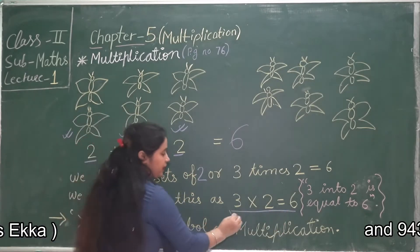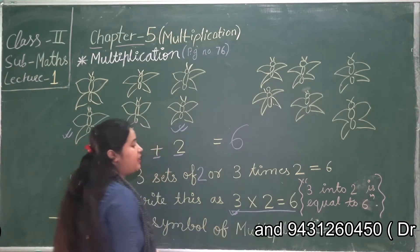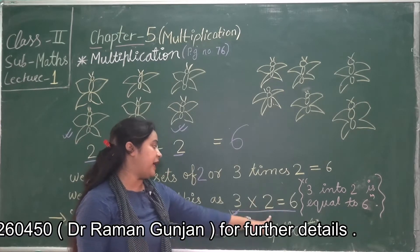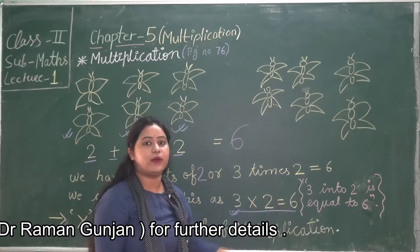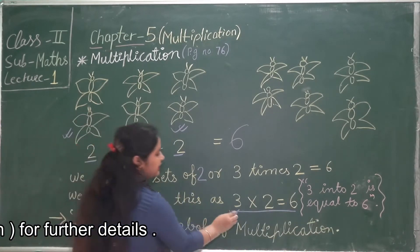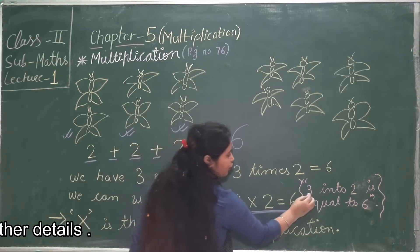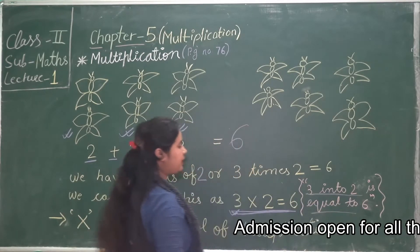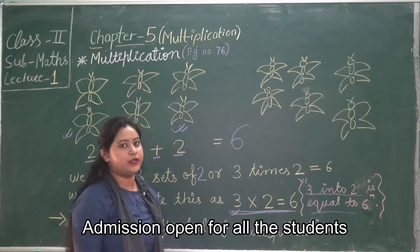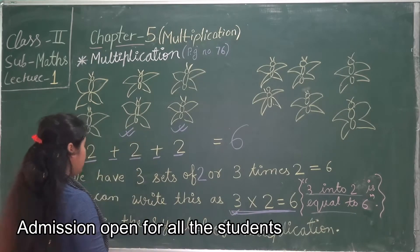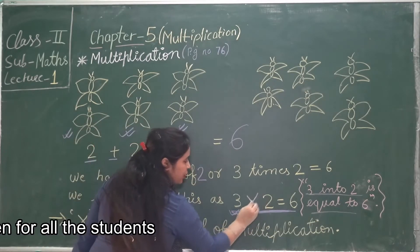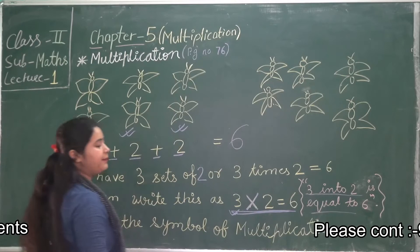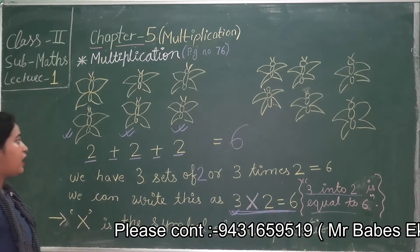When you recall the table of three, you will see that three multiplied by two is equal to six. We can read it as 'three into two is equal to six' or 'three multiplied by two is equal to six.' This symbol here is the symbol of multiplication, which we use in multiplication.